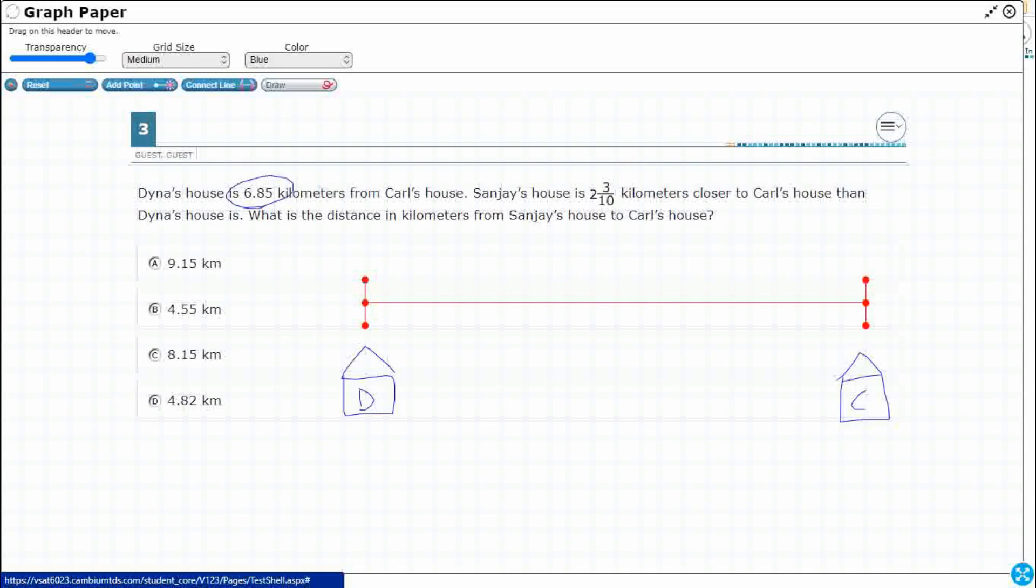All right, so I'm just going to write that up here: 6 and 85 hundredths kilometers away from each other. Now here's the interesting part. Let me switch to a different color here. We've got Sanjay's house.